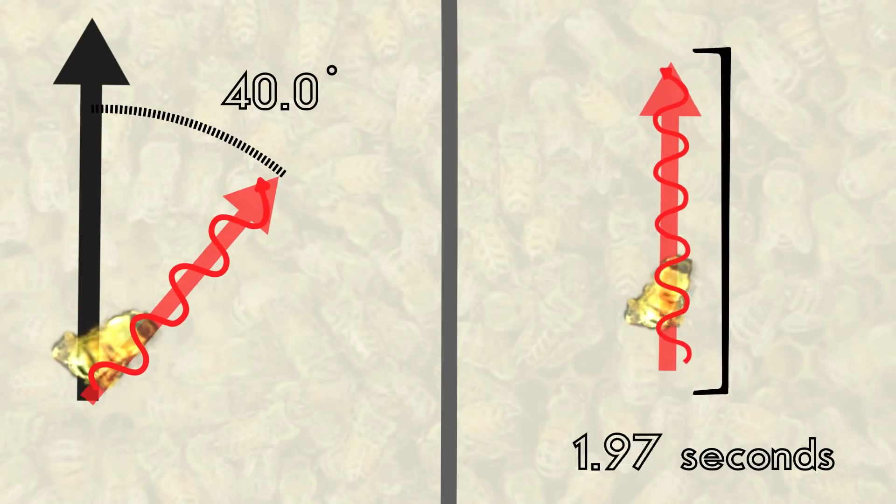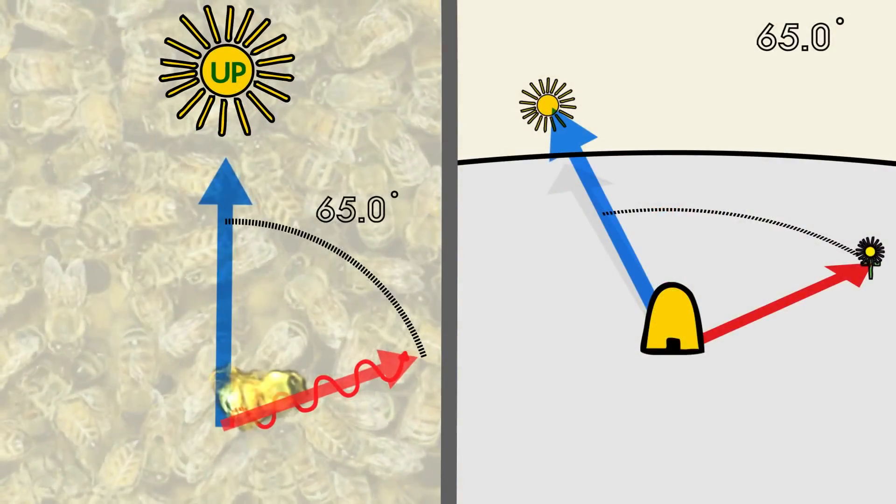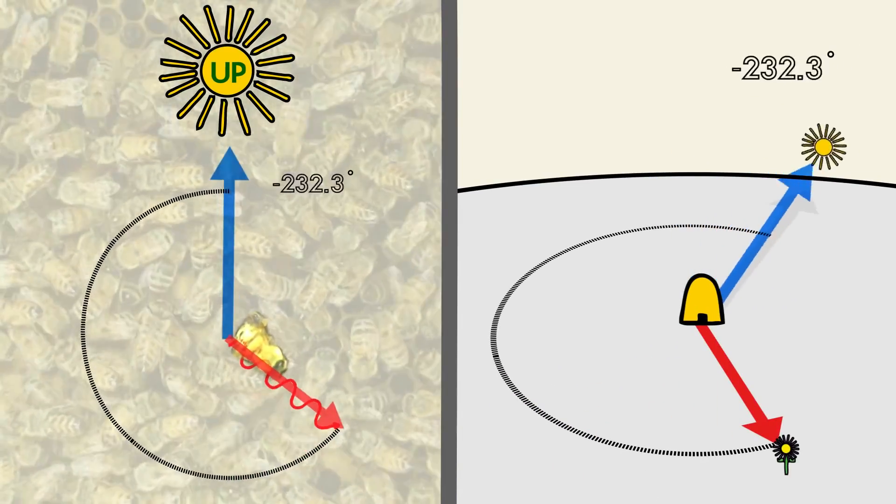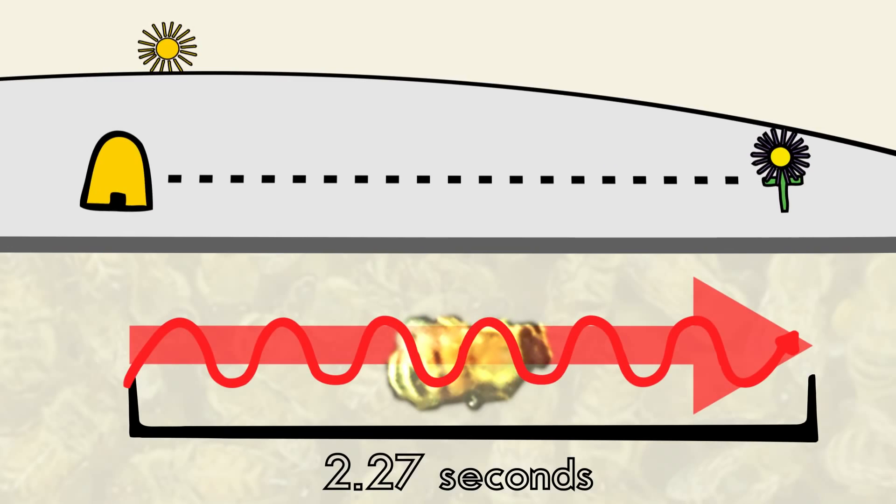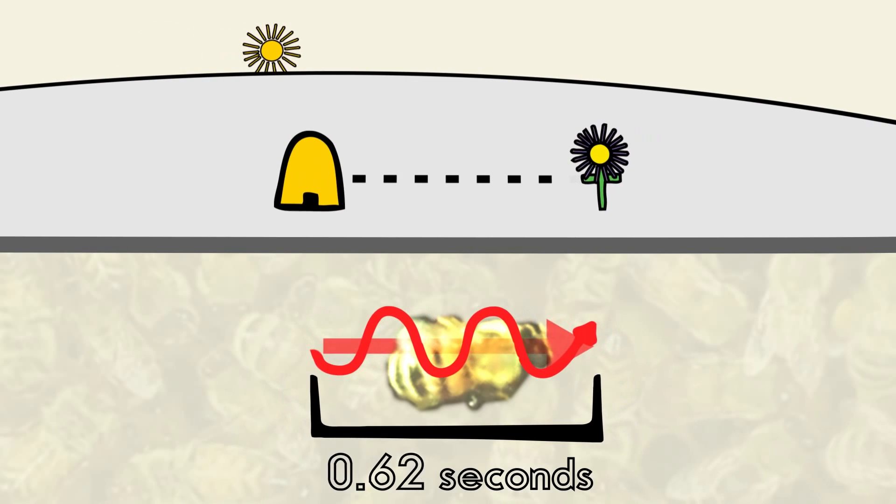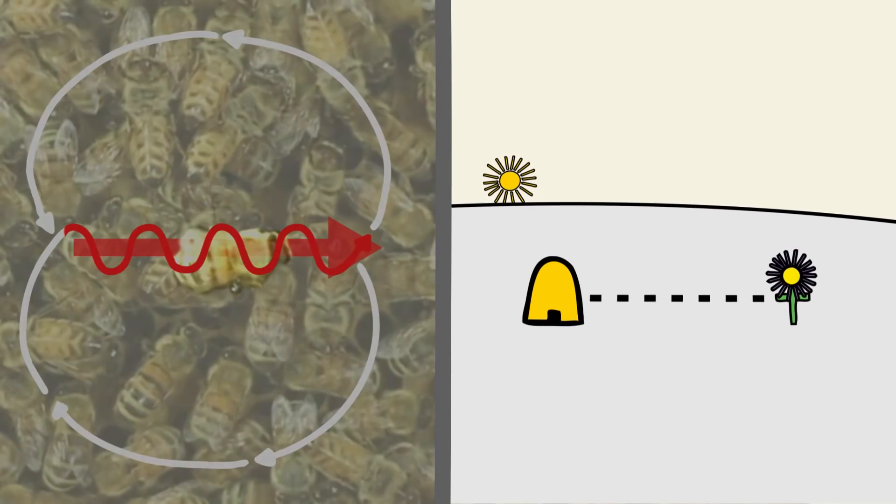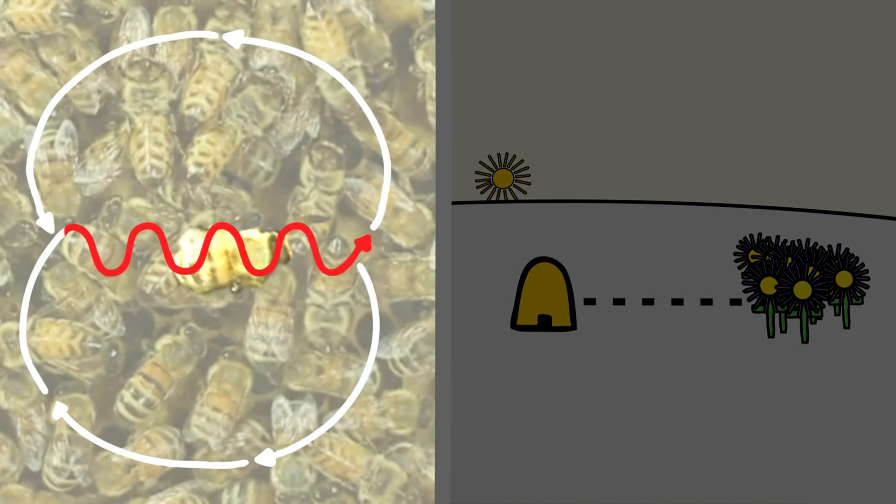Again, the information contained in a honeybee's dance consists of two parts. One, the orientation of the dance which describes what angle to travel away from the sun. And two, the duration of the middle part of the dance which expresses the distance of a food source away from the hive. Other information such as quality or abundance of food might also be encoded within other parameters of the dance or in pheromones released by the bee.